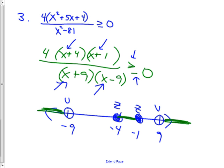Alright. Okay, so then your final answer would be from negative infinity to negative 9, and from negative 4 to negative 1 with brackets, and then from 9 to infinity. Anybody who had that one right? That's a good sign. Almost everybody.